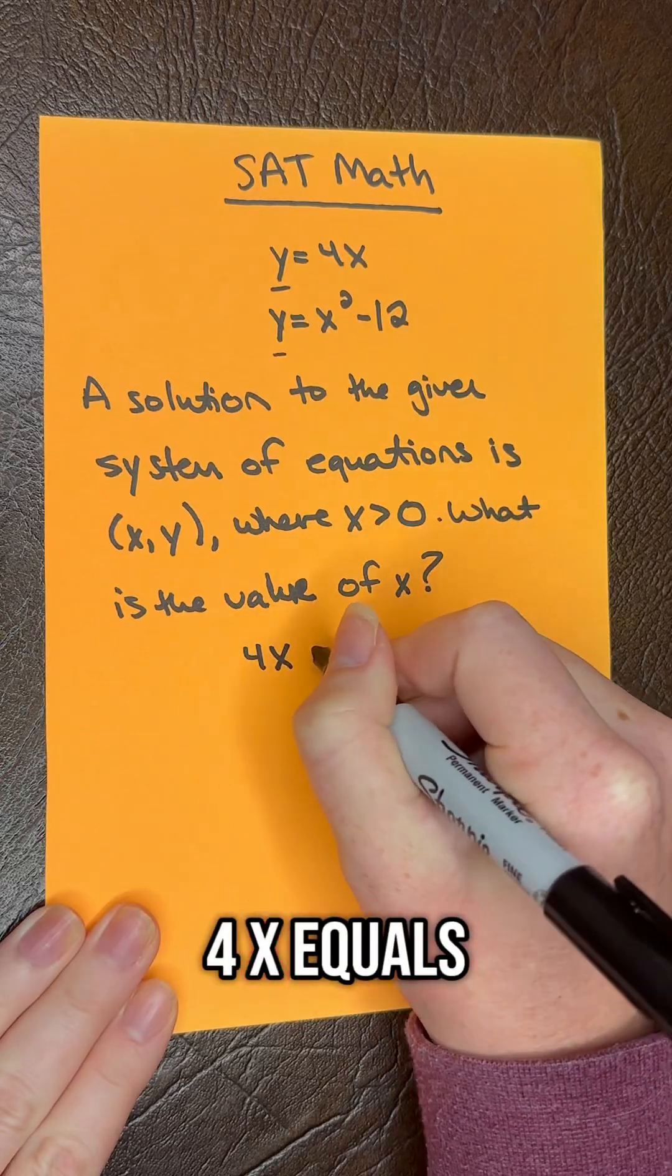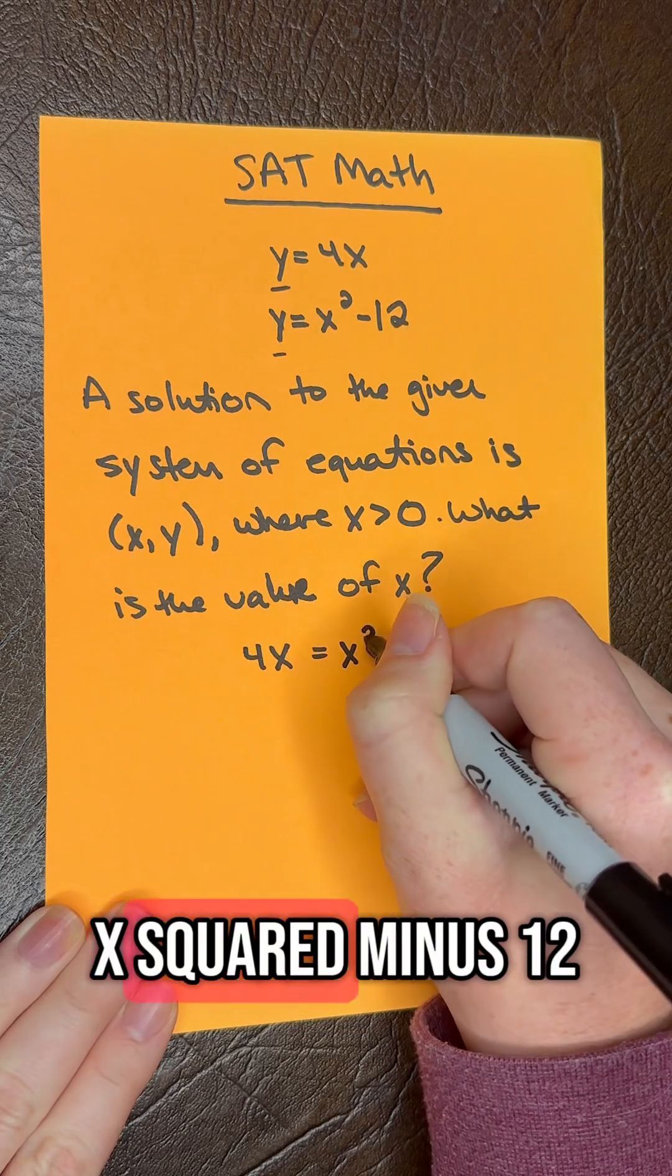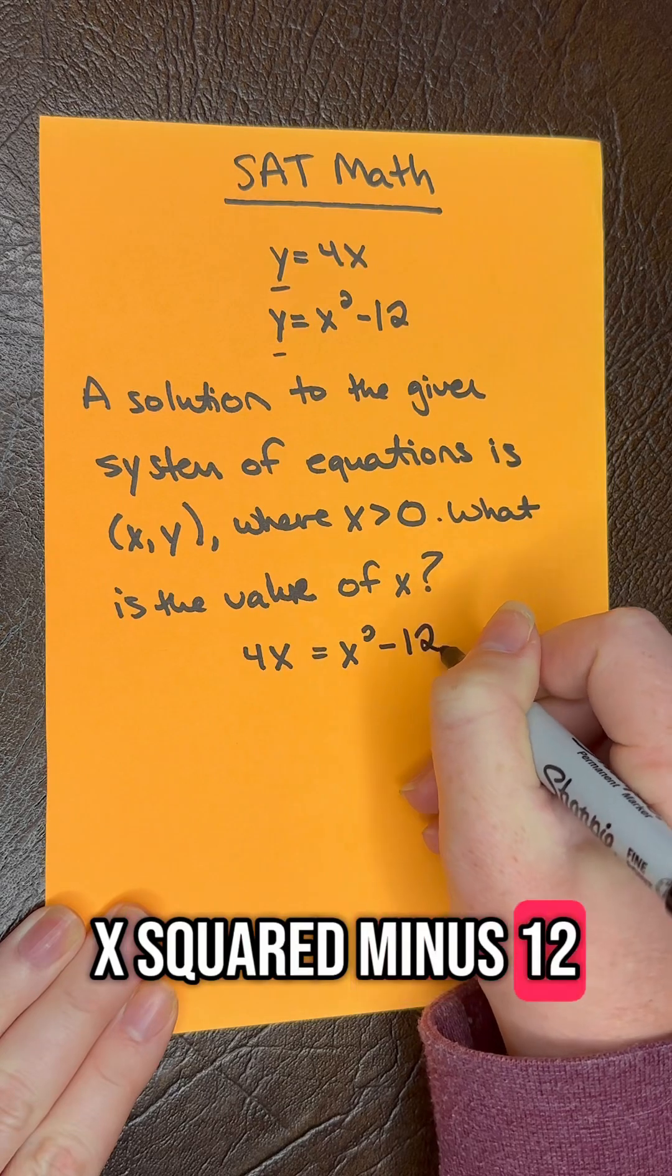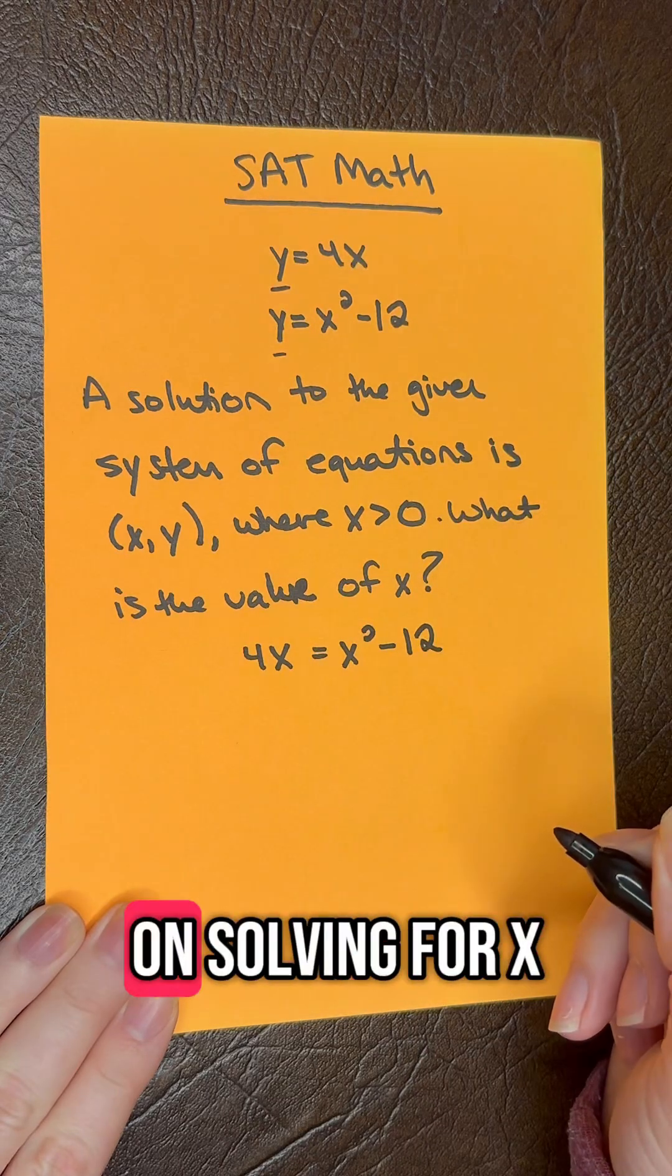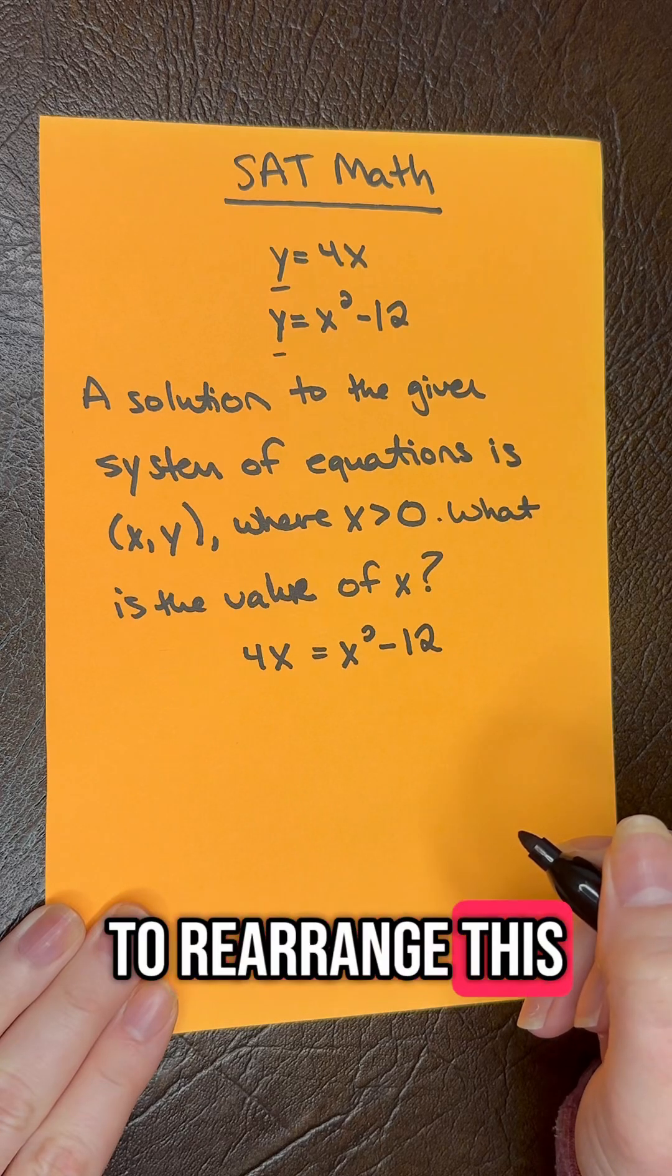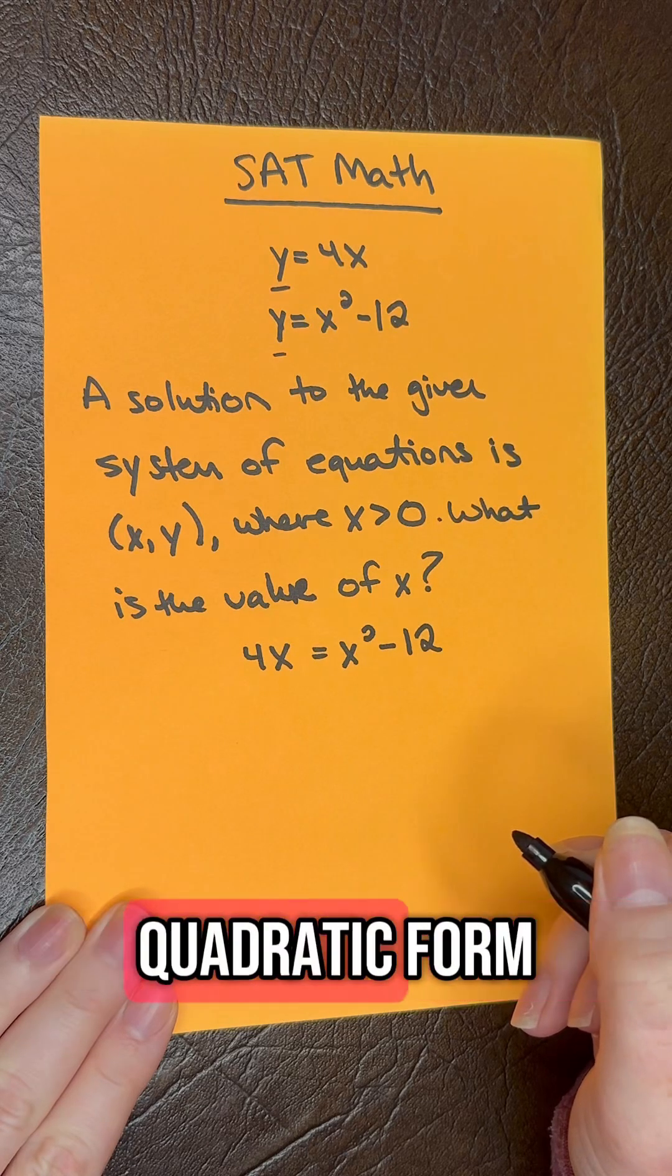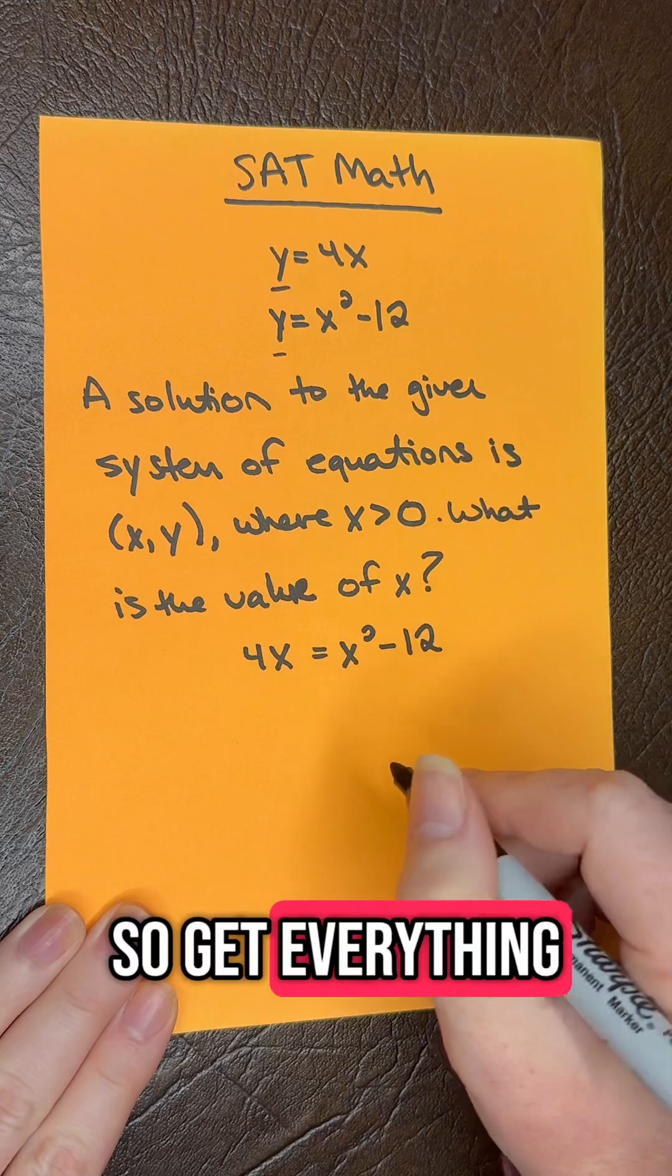So we have 4x equals x squared minus 12. And then we need to work on solving for x. We're going to rearrange this equation into standard quadratic form, so get everything to one side.